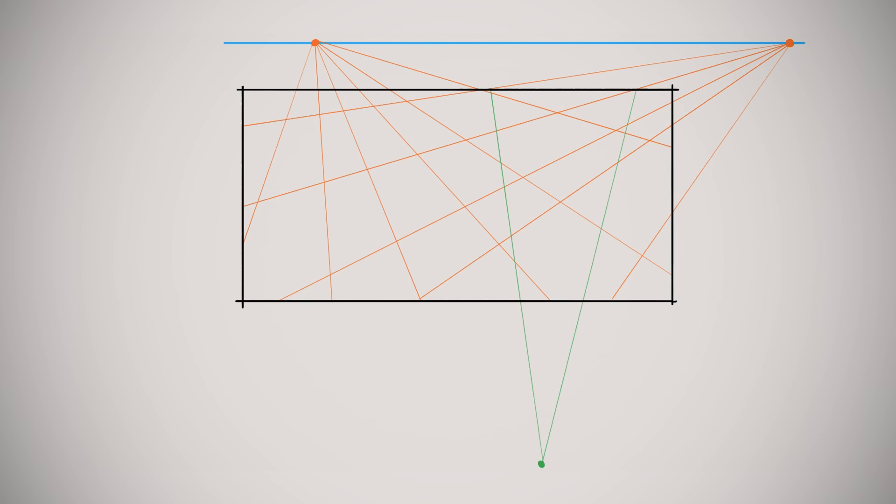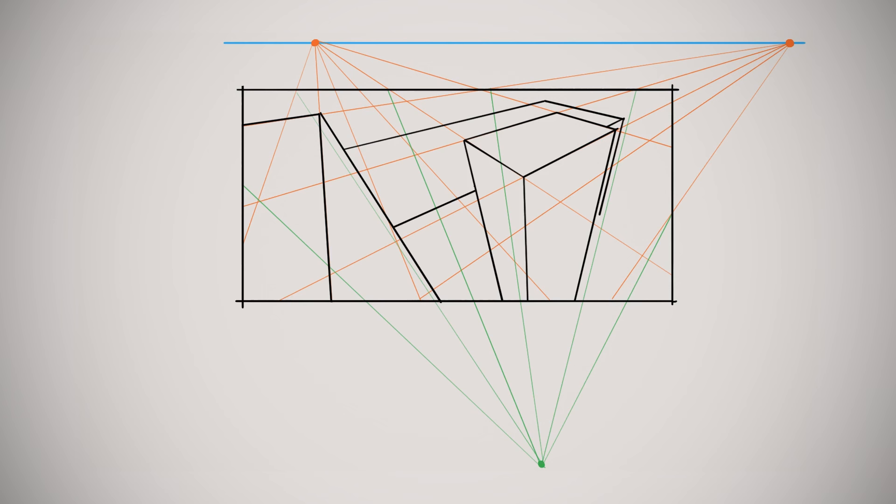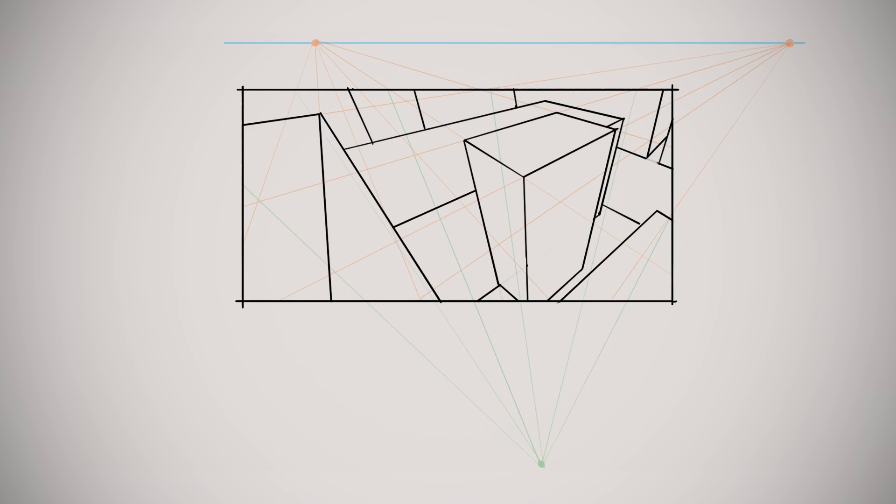For more dynamic and dramatic points of view, mapping out the vanishing point and its orthogonals is definitely a good idea. Dynamic angles are really what three-point is best used for since the effect it can create is so pronounced. Just remember not to go overboard with crazy angles all the time in your artworks — what may seem like a more impressive option can become gimmicky if it dominates your portfolio.